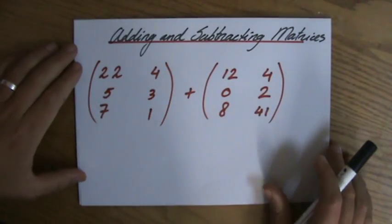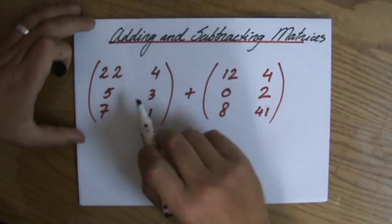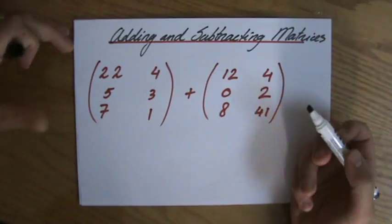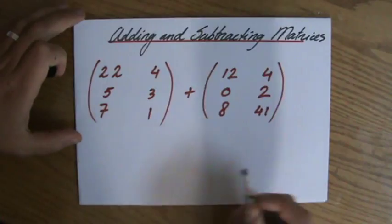So we're starting now to add and subtract matrices. I quickly wrote down this example question of a matrix, a 3x2 matrix, as you can see, and the order of the second matrix is also 3x2. The question is, what is the addition of the two?